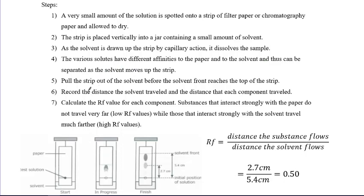Once separation is complete, pull the strip out before the solvent front reaches the top. You can see the liquid traveling up the paper; however, you don't want the front to go all the way to the very top because you need to see how far the solvent traveled. Always stop it before it reaches the very end of the paper.